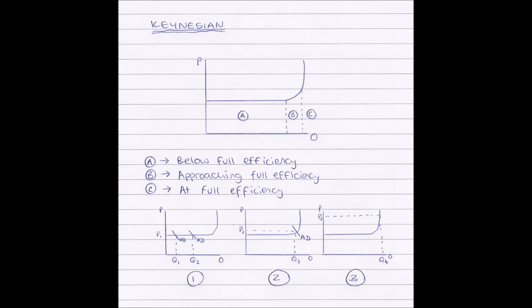Now here, if there is an increase in aggregate demand, that's shown on diagram 1 right at the bottom there, then there is no change in price, only a change in output. So, what this means is that because the economy is working below full efficiency,